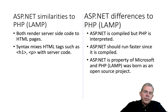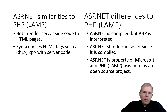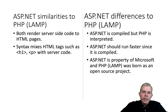ASP.NET is a property of Microsoft. The .NET Core is now supposedly open source and can run on any type of server. But historically, Microsoft has been the sole owner of ASP. LAMP was born out of a completely open source project that is free.